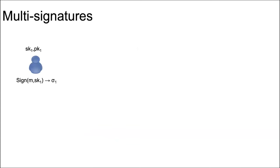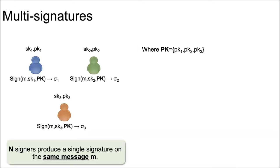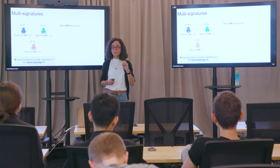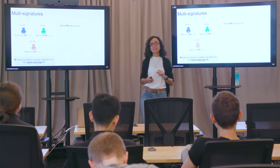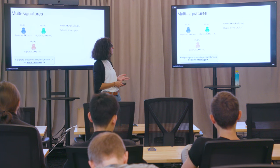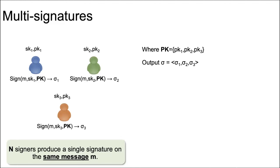Let me introduce what a multisignature is for those who haven't heard of multisignatures before. Traditional digital signatures are just run by one signer that has a pair of secret key and public key. You sign a message with your secret key and get a signature as output. In the multisigner setting, you have N signers that all want to produce a signature under the same message. A very trivial way would be to output the concatenation of all underlying signatures, but this results in a linear size signature relative to the number of signers, which is not good.